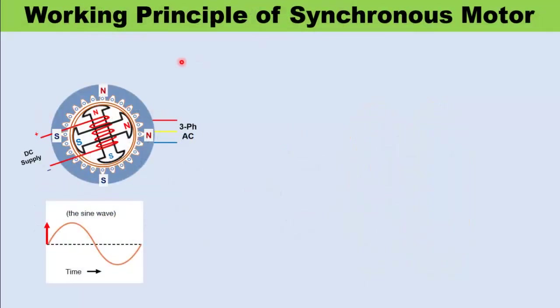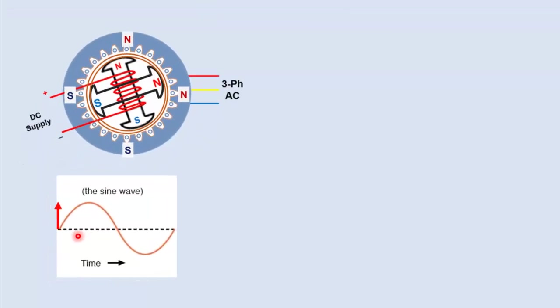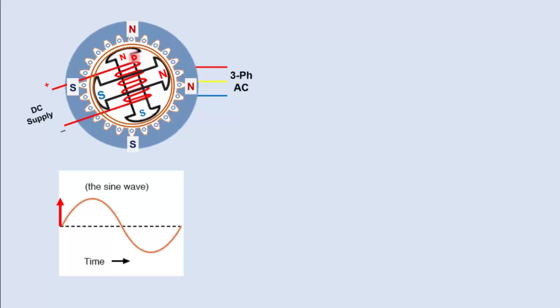Now it's time to see the working principle of synchronous motor. Here in this image, you can see the magnetic poles appear on the stator during zero instant of AC cycle. This is the initial position of the rotor with its north pole slightly behind the north pole of stator.